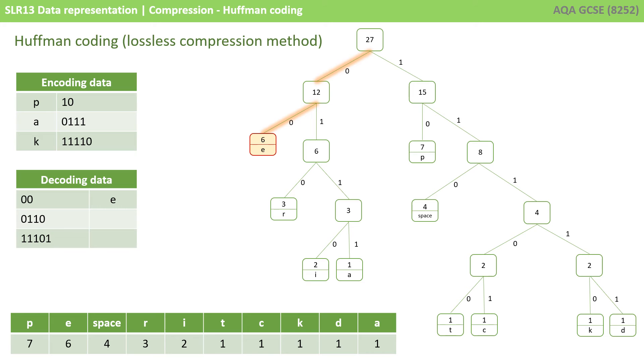You also need to be able to decode Huffman bit patterns from a Huffman tree you've been given. If you were given the bit pattern 0, 0, you start at the top, you follow the left branch, 0, and the left branch again, 0. So, that decodes into the letter E. In a similar way, 0, 1, 1, 0 decodes into the letter I. And 1, 1, 1, 0, 1 decodes into the letter C.